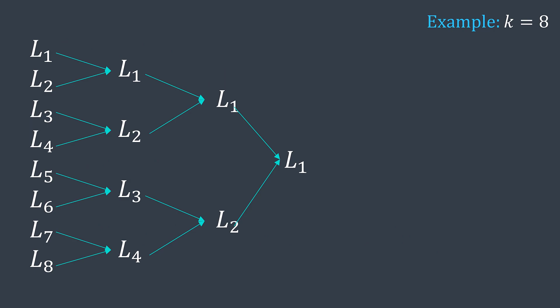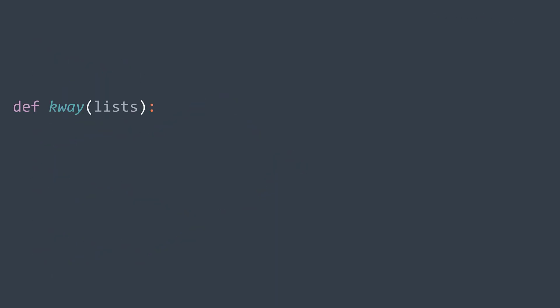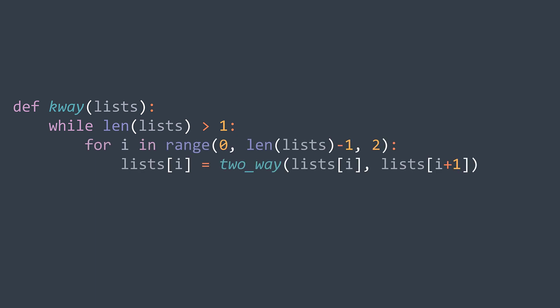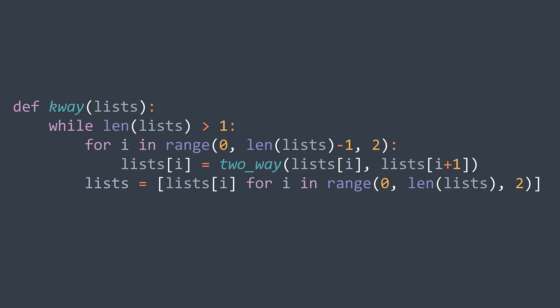We can improve this by merging the first list with the second, the third with the fourth, and so on — then keep doing that until we merge the last two lists. In code, while we have more than one list, we iterate over even indexes and replace lists[i] with the result of merging lists[i] with lists[i+1]. At the end of each outer loop iteration, we remove those at odd indexes and keep only those at even indexes. We keep doing that until one list remains and return it.